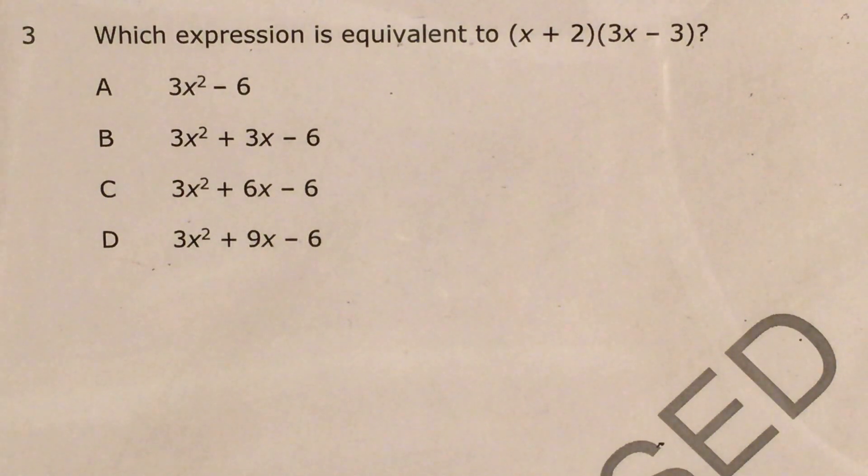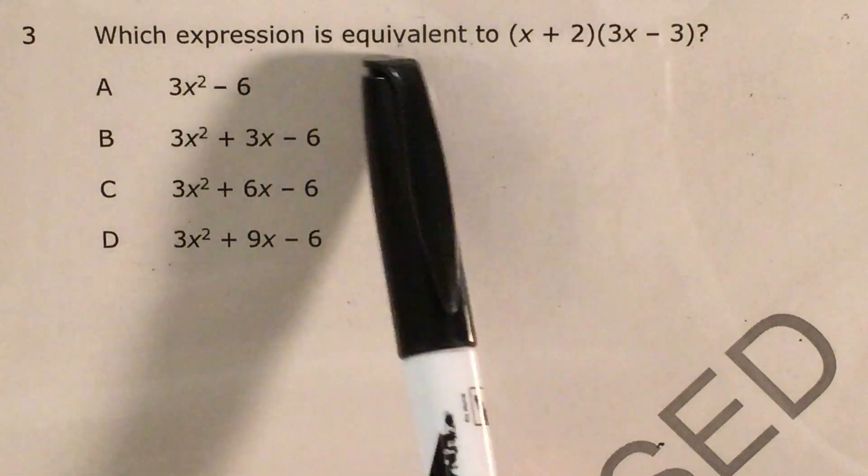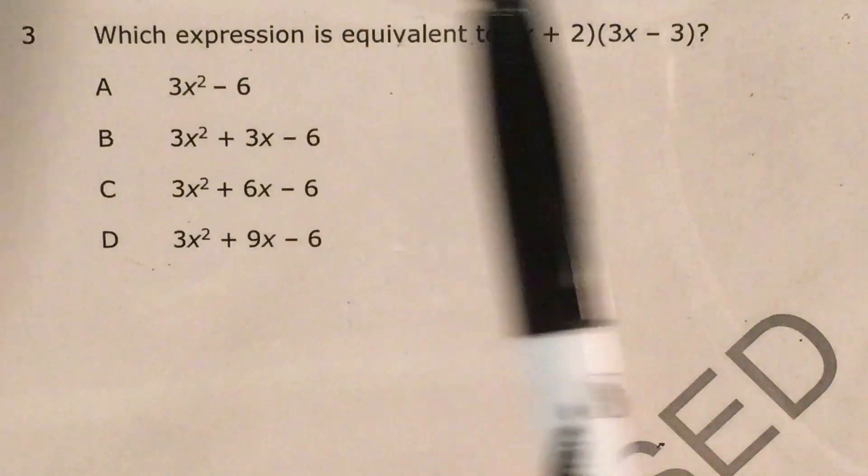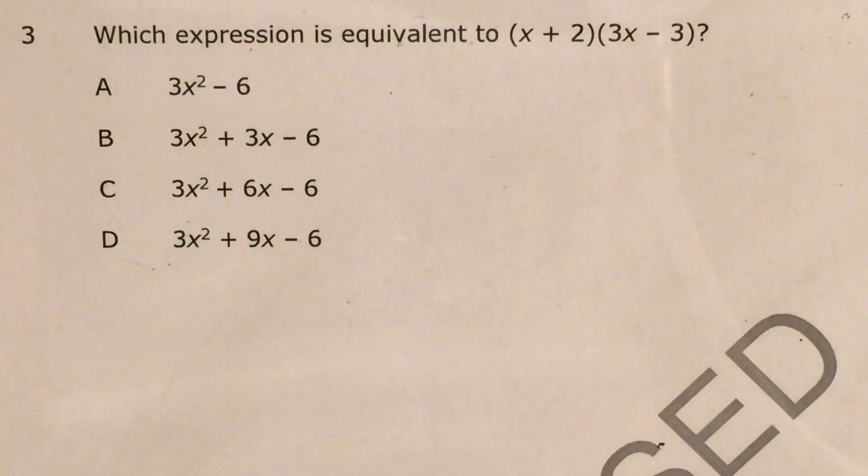The question is just asking us to find out which expression is equivalent, so means the same thing but with different numbers, to (x + 2)(3x - 3), and both these are in parentheses.